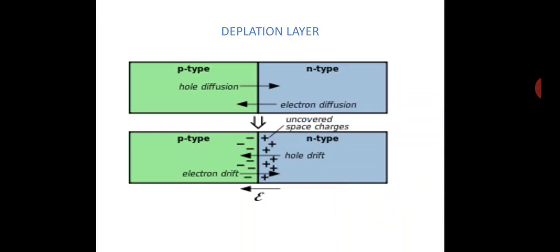The P-type has holes and the N-type has electrons. When P and N are joined together, holes attract electrons and electrons attract holes — they move toward each other. Electrons go to the P substrate and holes go to the N substrate. A barrier layer forms where the P-type substrate has minus charges and the N-side has plus charges. This layer is called the depletion layer, and it behaves like an insulator. When this layer is present, no charge carriers flow from P to N or N to P.